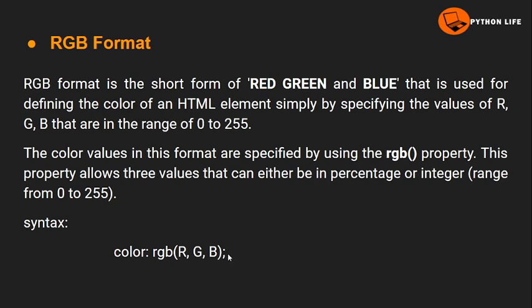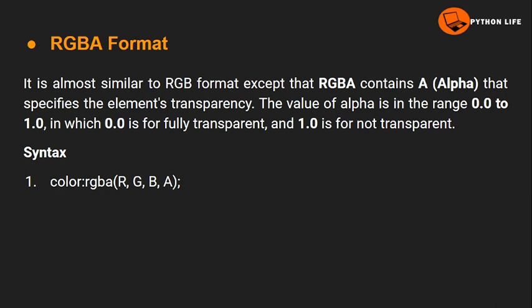The ranges are 0 to 255. For example, red color is 0, green color is 105, and blue color is 255, giving you a specific color combination. This is the RGB format. The RGB property takes three parameters: red, green, and blue, each in the range of 0 to 255.